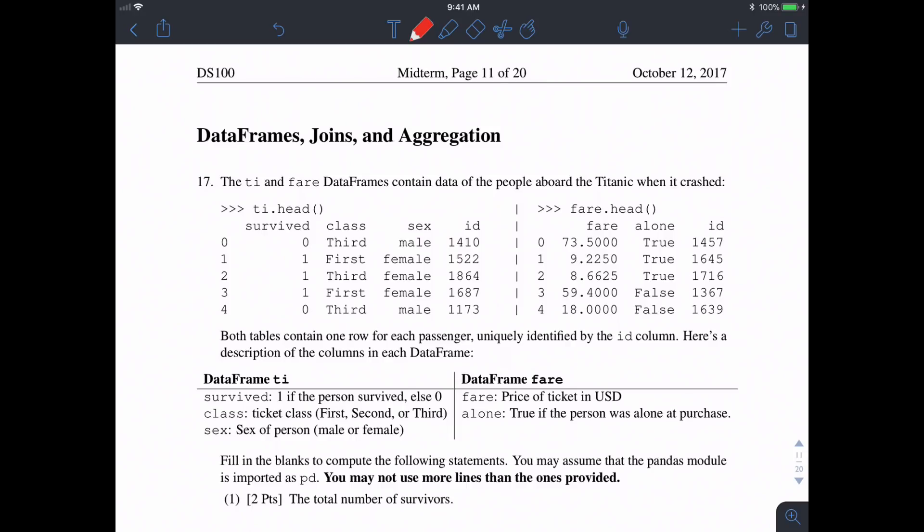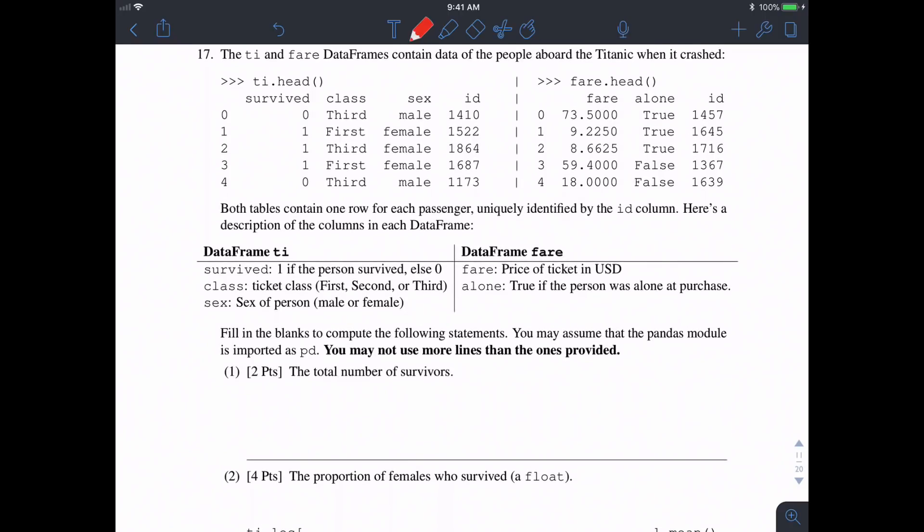Now let's talk about the data frames, joins, and aggregation part of this exam. We're given two tables, or data frames, TI and FAIR, each of which has slightly different information, and we're asked to use them and write some pandas code that tells us some information.